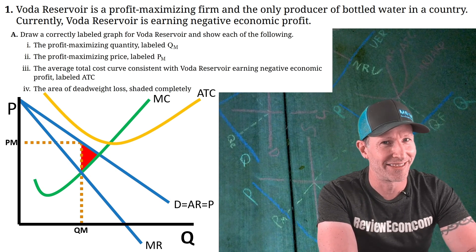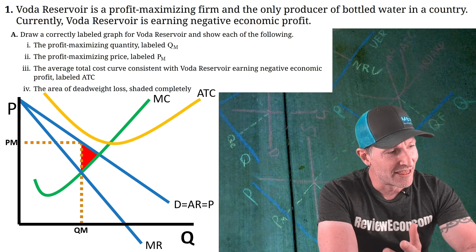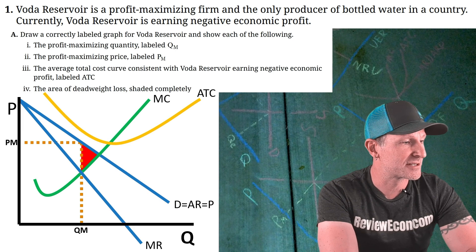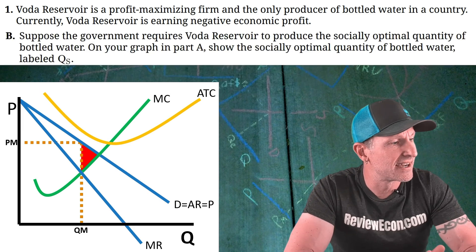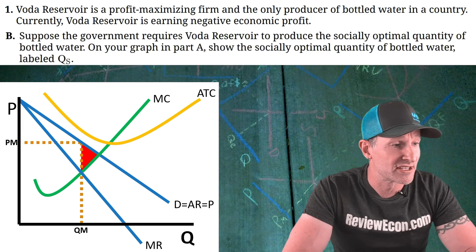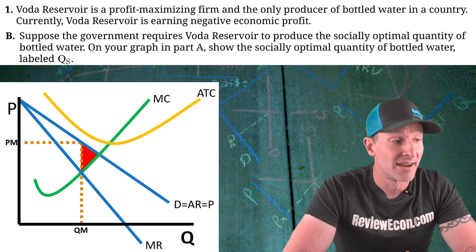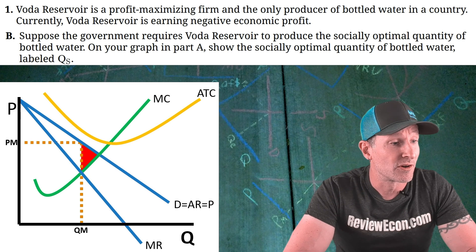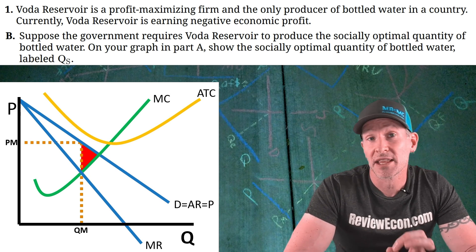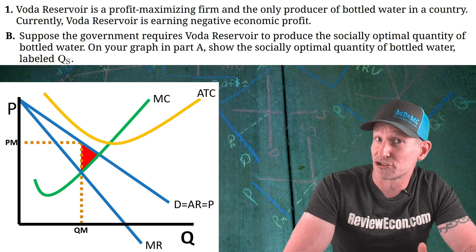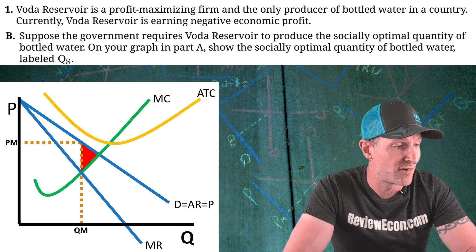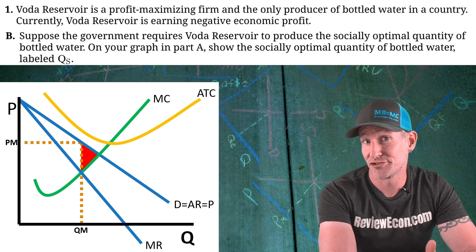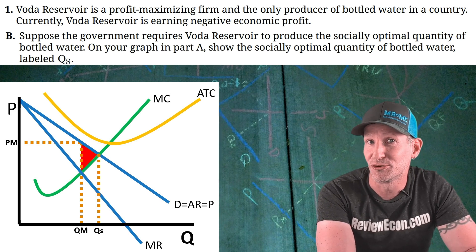The whole question is worth 10 points. For the next part, the government requires Voda Reservoir to produce the socially optimal quantity of bottled water. On the graph we already drew, we have to show that socially optimal quantity and label it QS. The allocatively efficient or socially optimal quantity is found where demand intersects the marginal cost curve — find that demand equals marginal cost point and mark that quantity QS.